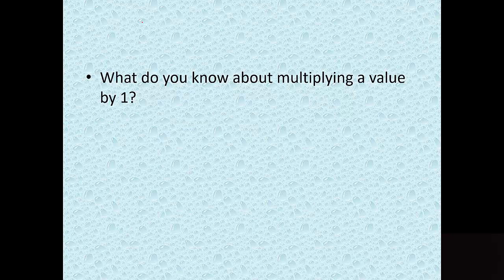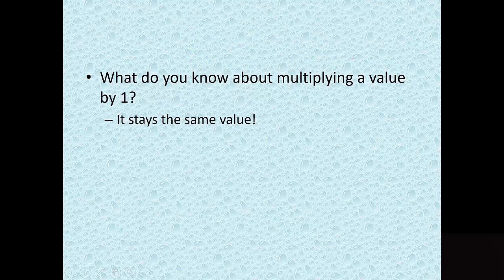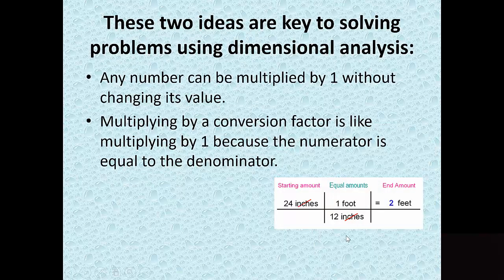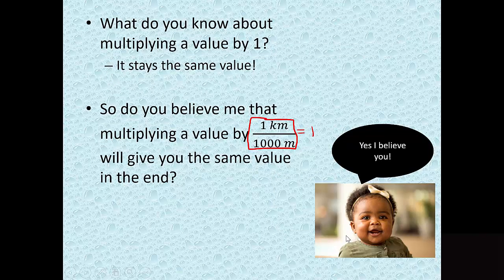Since one kilometer and 1,000 meters are equal, dividing them gives one. And what happens when you multiply a value by one? You get the same value — 32 times one is still 32, pizza times one is still pizza. So multiplying by that conversion factor, which equals one, gives you the same value in the end.